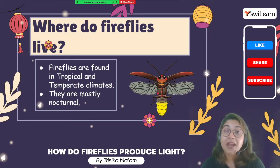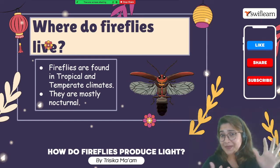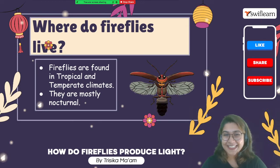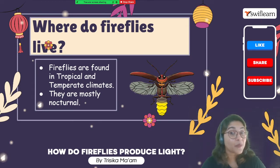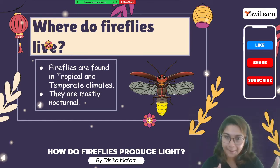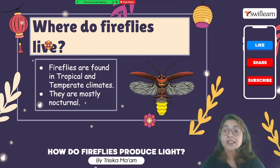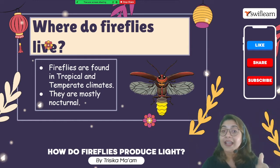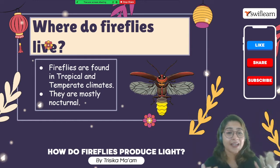Let's see where we can find these fireflies, because we have to collect them and keep them in a jar! They are found in tropical climates and temperate zones — in the tropical regions of Asia and America. Most importantly, we can see them mostly during the nighttime, and that is why we say they are nocturnal in nature.